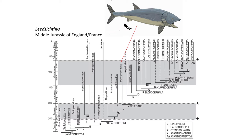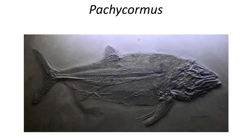Leedsichthys is one of the largest fish ever discovered, with an estimated length of 16.5 meters. The closely related but smaller Pachycormus was a quick-swimming fish, similar to modern tuna, although modern tuna are members of the Perciformes, with a fossil record confined to the Cenozoic.